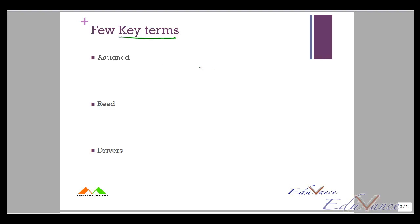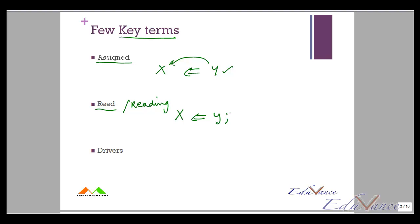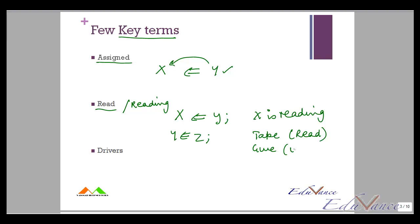First is the term 'assigned'. If I have a variable or signal x and another variable or signal y, if I give the value from y to x, then typically I say that x is assigned the value of y. The second is 'read' or reading a value. If x is getting the value of y, I say that x is reading the value. If y is getting it from z, then y is reading the value of z. So when you take a value it is called a read, and when you give a value it is called a write.